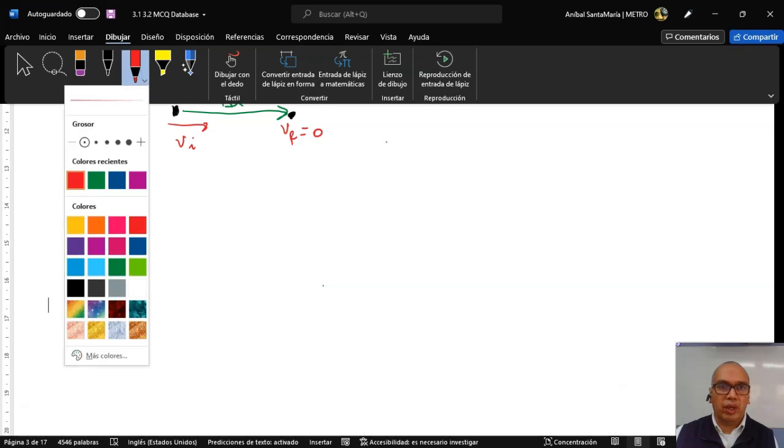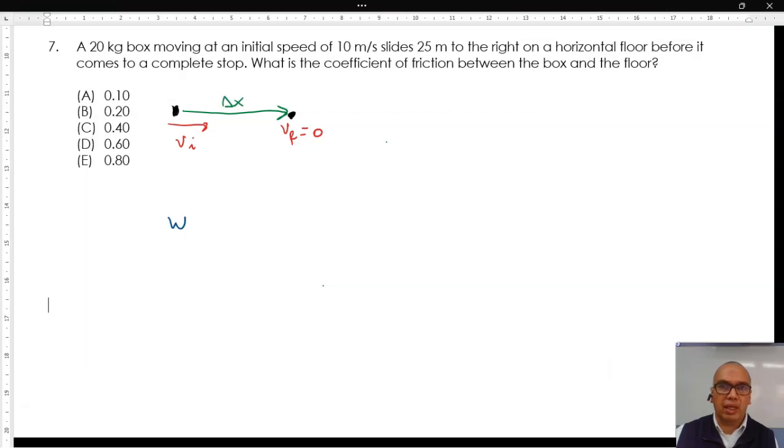The most direct way to calculate the coefficient of friction given the known data is through the work-kinetic energy theorem. The resultant work exerted on the box is equal to the change in kinetic energy of the box. Since the box comes to a stop, the final kinetic energy is zero.